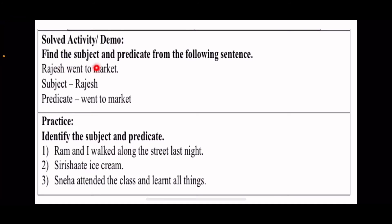Next activity: find the subject and predicate from the following sentences. Rajesh went to market. What will happen? Rajesh went to market. Rajesh is the subject, went to market is the predicate.